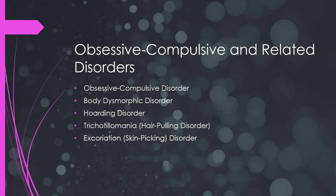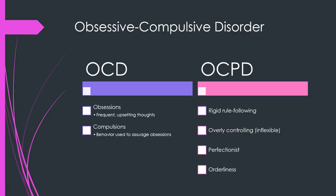Obsessive-compulsive and related disorders include five different disorders. There's an important difference between OCD (obsessive-compulsive disorder) and OCPD (obsessive-compulsive personality disorder). With OCD, obsessions are frequent upsetting thoughts and compulsions are behaviors used to assuage those obsessions — like turning a door handle three times or compulsively checking the oven. OCPD is more about being really controlling, perfectionist, orderly, and rigidly rule-following — if you've seen the show Monk, that might be an example.